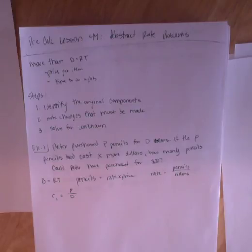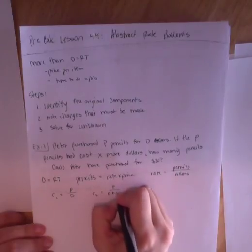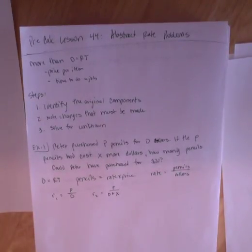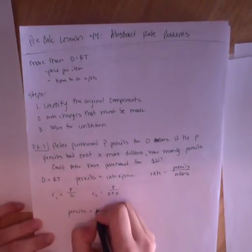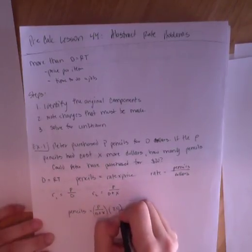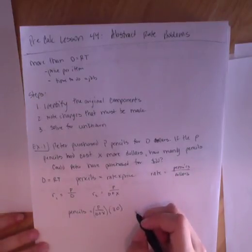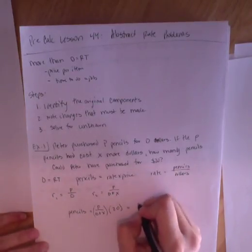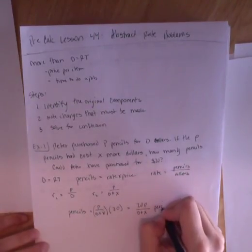Now, it says if the P pencils had cost X more dollars, so my rate 2, P pencils cost X more dollars. How many pencils could Peter have purchased for twenty dollars? So pencils equals my new rate, P over D plus X, times my new price, which is twenty.